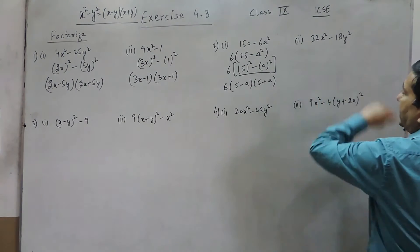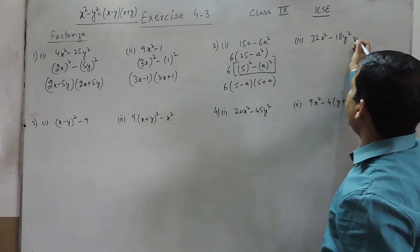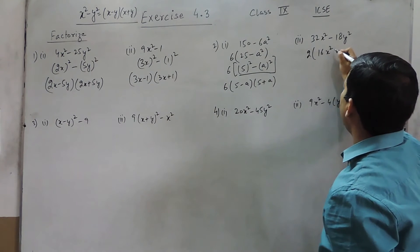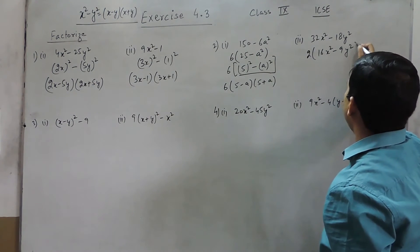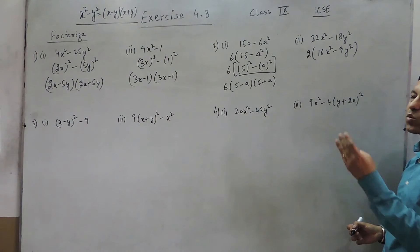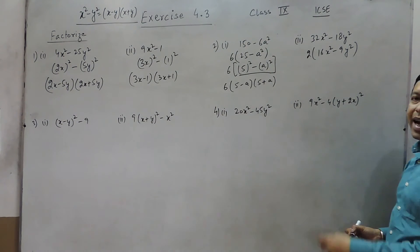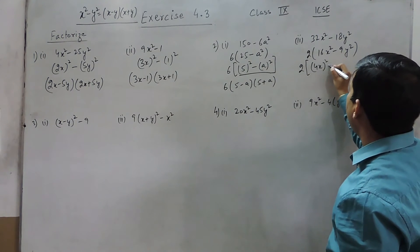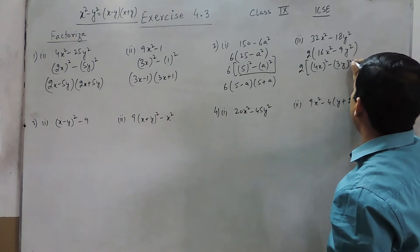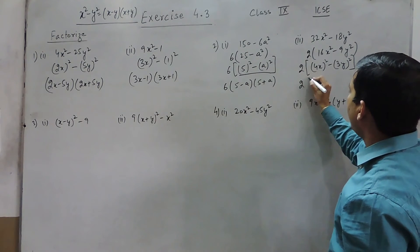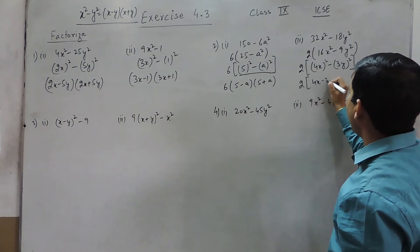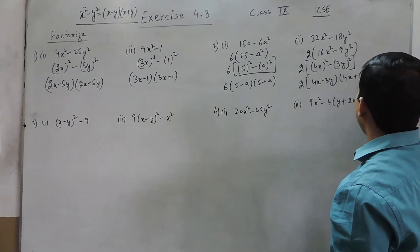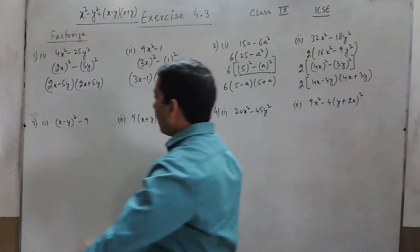Here also the terms are not perfect squares. We can take 2 as common out of the 2 terms. It becomes 2 times 16x square minus 9y square. Now 16x square is a perfect square, so this can be written as 4x whole square minus 3y whole square, which can further be factorized as 4x minus 3y as one factor and 4x plus 3y as another factor.